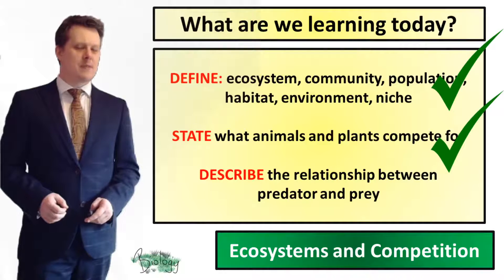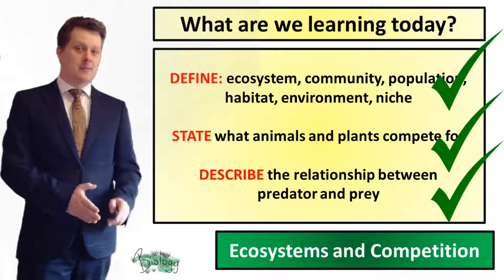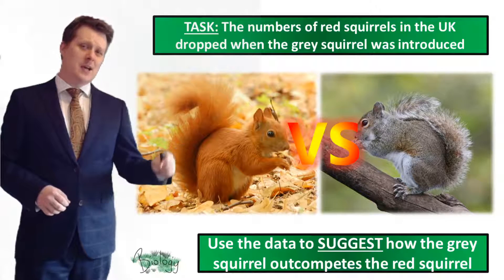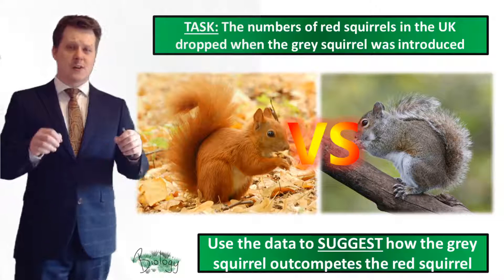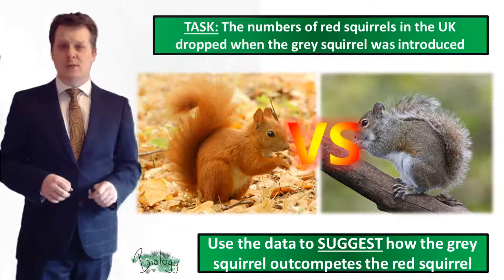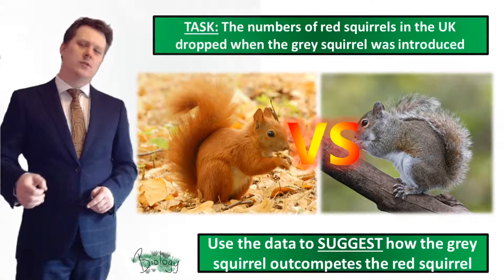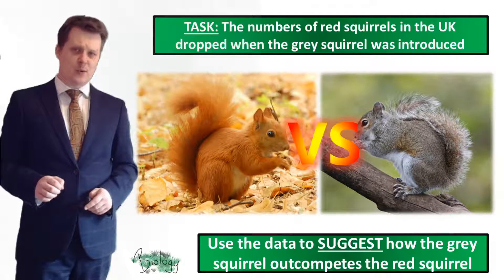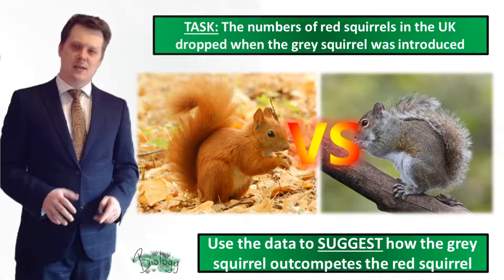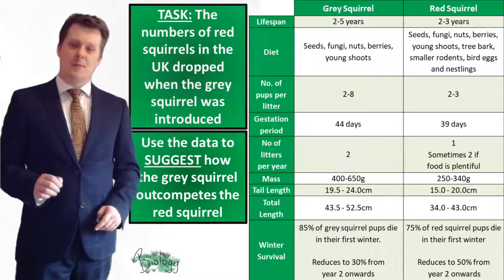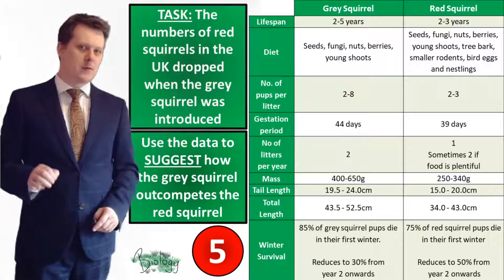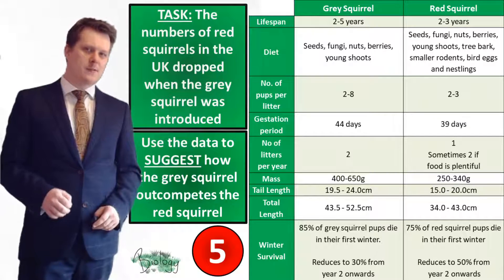Next I want to talk about squirrels — the number of red squirrels started to drop when the grey squirrel was introduced. I want you to use the data on your worksheet to suggest how the grey squirrel outcompetes the red. If you haven't got a worksheet, the data is going to be put on screen. I'm going to put five seconds on the clock, and if you need more time pause the video, and when you're finished we'll go through the answers together.